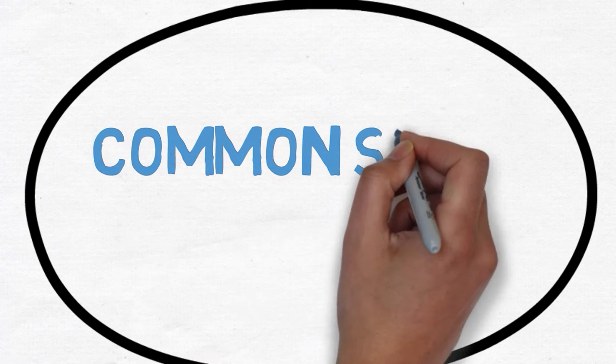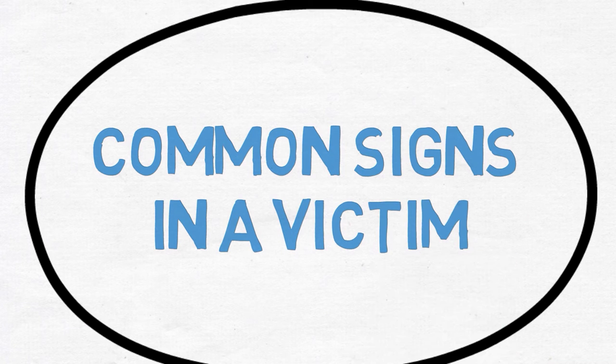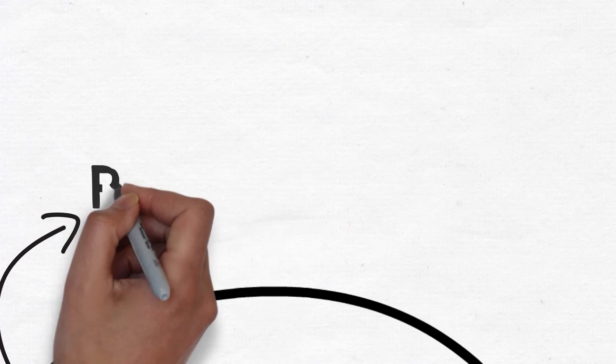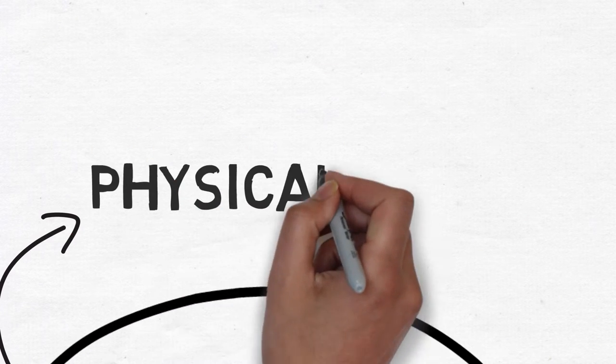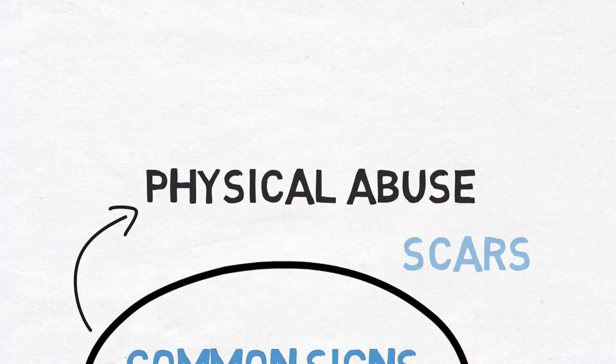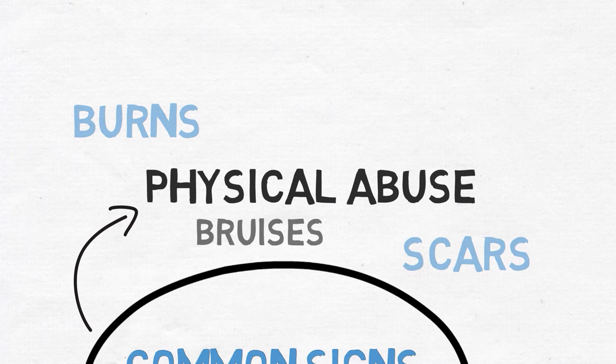Signs of human trafficking may overlap with signs of domestic violence or sexual abuse. You should be on alert if you see any signs of abuse such as scars, burns, mutilations, bruises, or untreated wounds or infections.